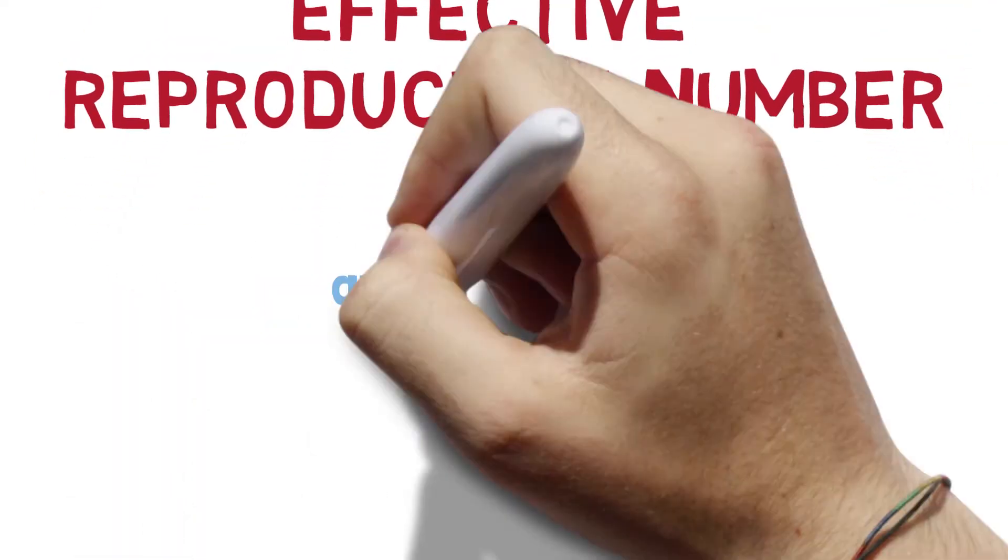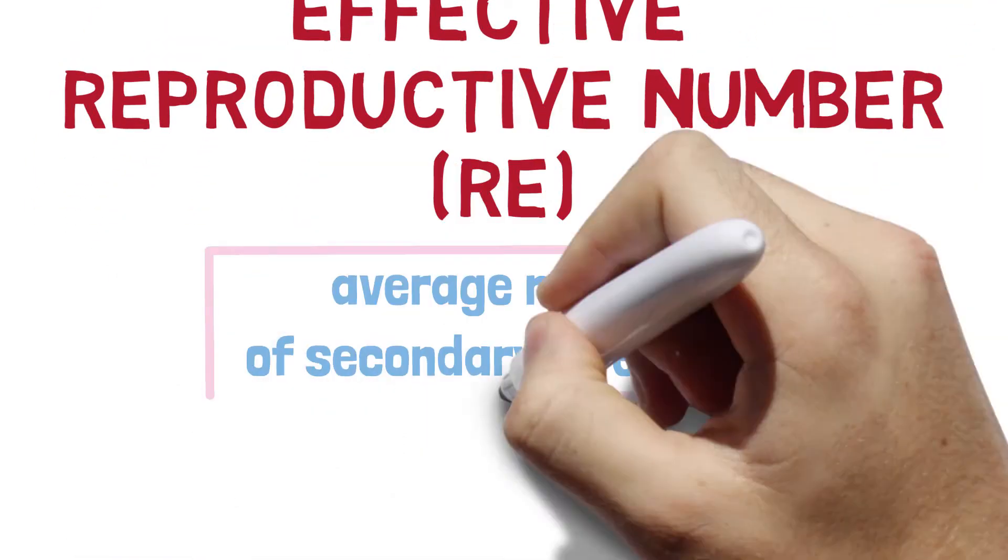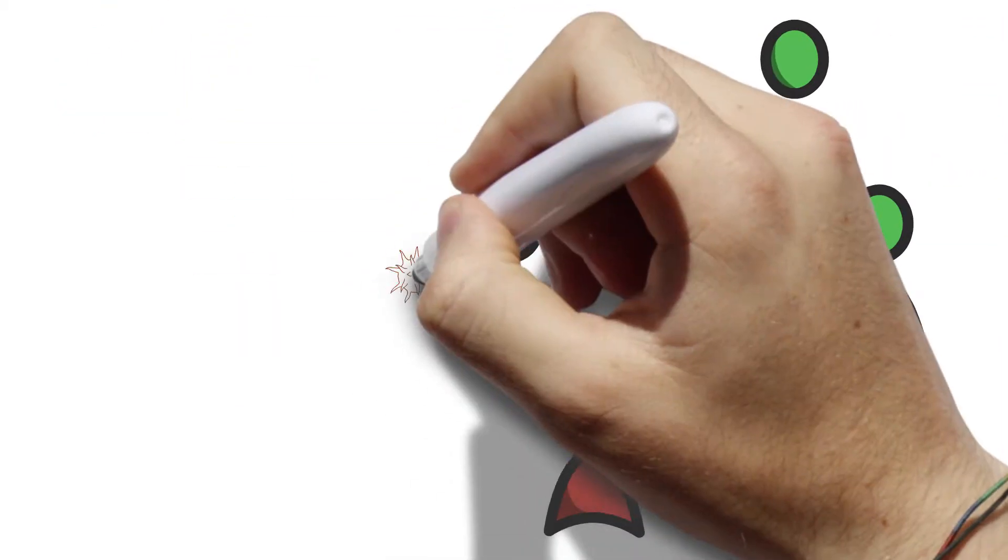The effective reproductive number. This is the average number of secondary infections caused by an infected individual in a population with varying levels of immunity.